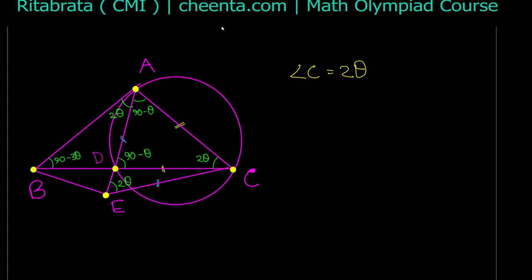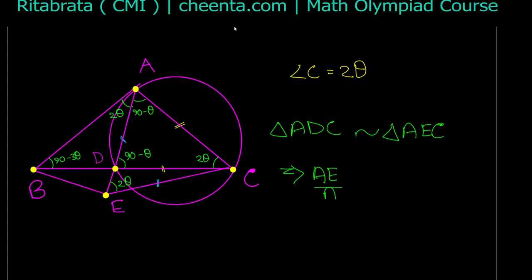We can also observe another thing that makes our life a lot easier: triangles ADC and AEC have all angles the same, so these two triangles are similar. Triangle ADC is similar to triangle AEC, and similar triangles have the same side length ratios. From that we get: AE / AC = AC / AD.